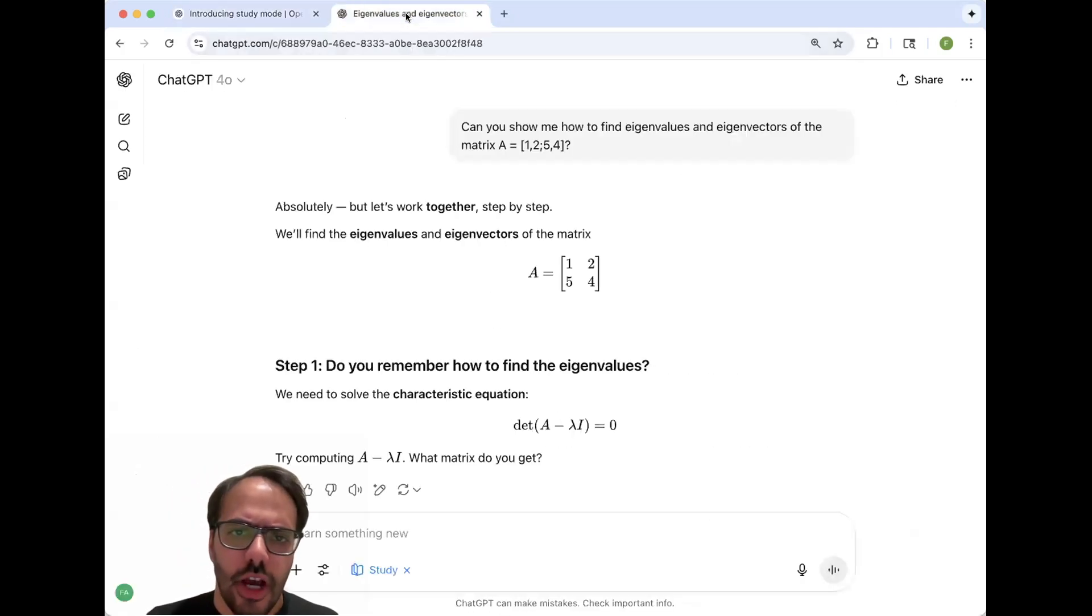So how can we use this? I want to show you an example of this in the context of linear algebra, which is one of the most difficult topics in college. And let's say in this case, I want to find eigenvalues and eigenvectors of a two by two matrix where the first row we have one and two and the second row we have five and four. And let's say we don't know how to do this and we want to use study mode.